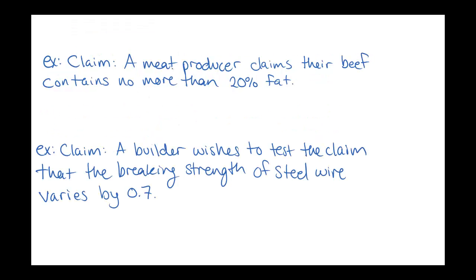Here's another claim: a meat producer claims that their beef contains no more than 20% fat. This is a claim about a proportion. The population here would be all of the beef that they produce, and the fat content would vary a little bit. This claim says the proportion p is less than or equal to 0.20 — it could be 20% or less, but not any more than that. That's our claim in symbolic form.